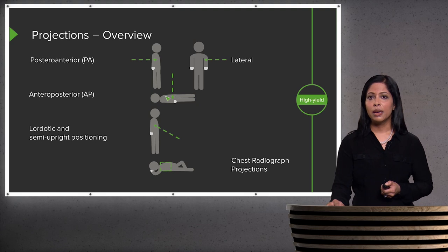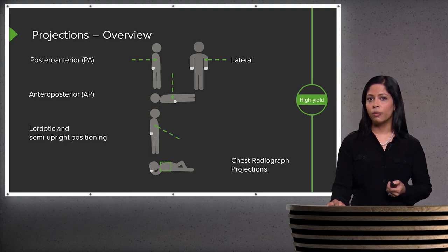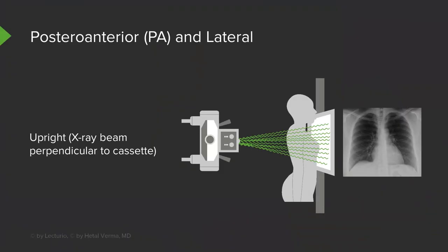This is an example of an AP, or anteroposterior, view which is occasionally obtained particularly in patients that aren't able to stand upright. This is an example of a lordotic or semi-upright position, which we'll discuss further. The standard PA and lateral is the view most commonly encountered when the patient has a normal chest x-ray.